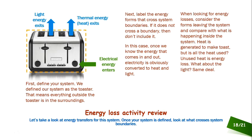Looking for energy losses: thermal energy leaving the system comes from the glowing nichrome wires inside the toaster. Some of that heat toasts your bread, but a large portion of the heat generated by those wires never even reaches the toast — it goes straight up and out. These are heat losses: unavailable energy not doing the work we want done.